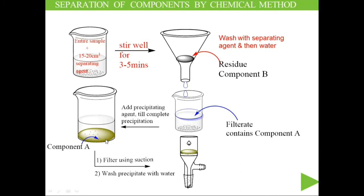The precipitate can be filtered using suction filtration — a Buchner funnel attached to a pump which creates a vacuum below, causing filtration to happen much faster. Ordinary filtration would also work. The precipitate obtained is washed with water and dried, completing the separation of the two components. We will now look at the live demonstration to understand the process better.